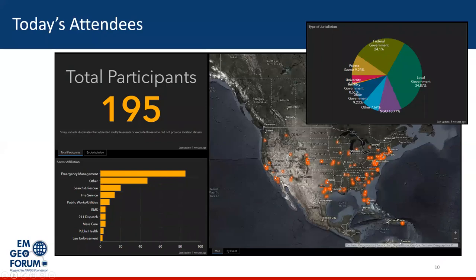So who do we have participating today? A little over 200 folks registered, of which we were able to map 195. We have a really good cross-section of the US, with a strong showing of both local and federal partners. Most identify with emergency management, search and rescue, fire service, and a large cadre of others — quite a good cross-section from all sectors.